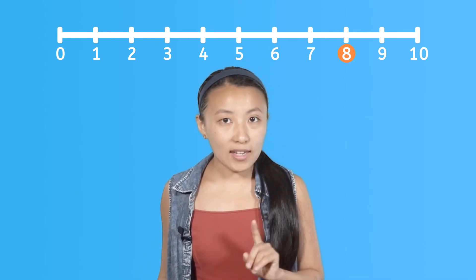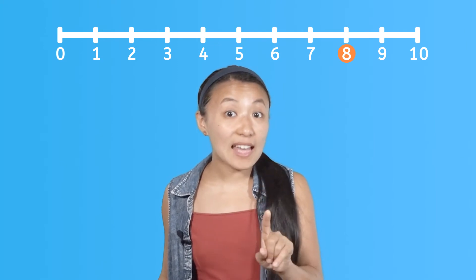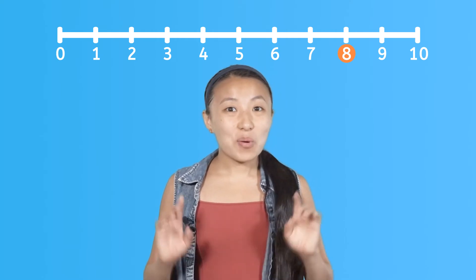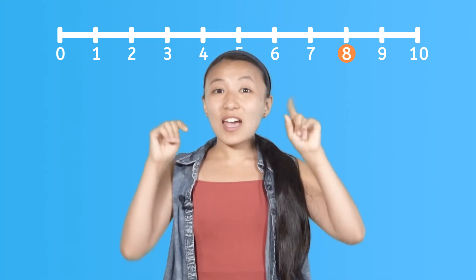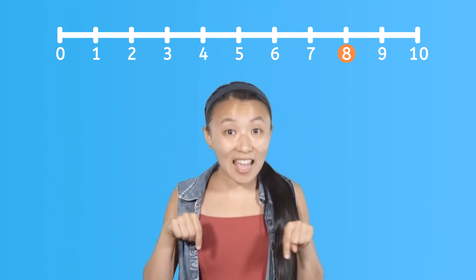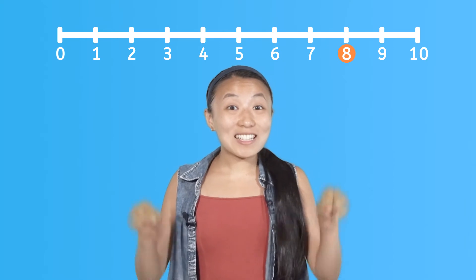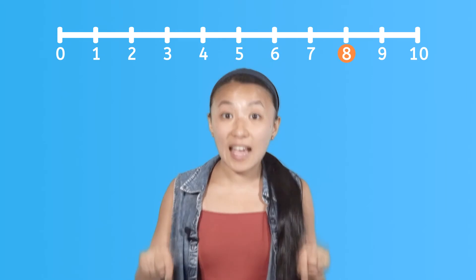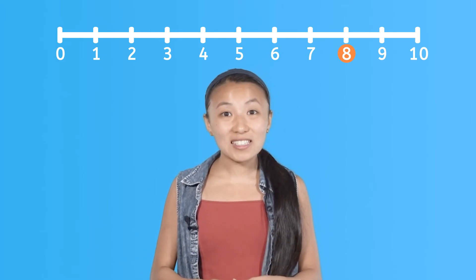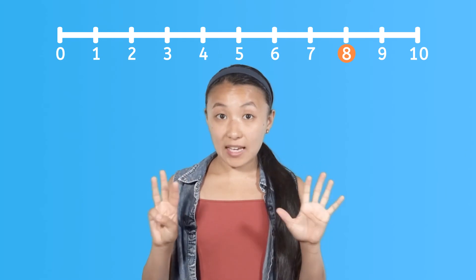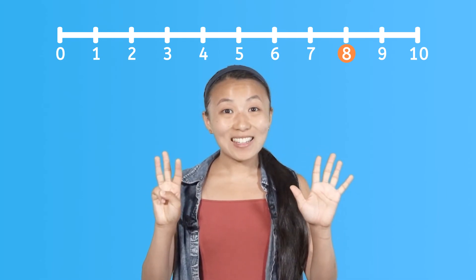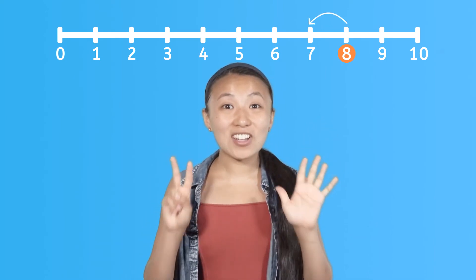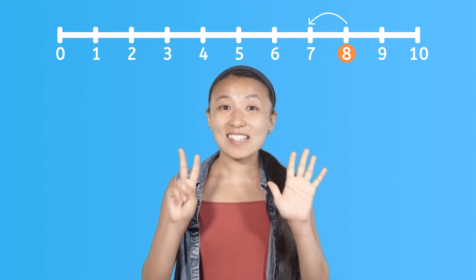Now, what if we wanted to find one less than eight? Point up if you think we should count up, and point down if you think we should count down. We're going to count down, because each number we say when counting down is one less than the number before it. So if we start counting down from eight, what number should we say? Seven. Seven is right before eight on the number line, so seven is one less than eight.